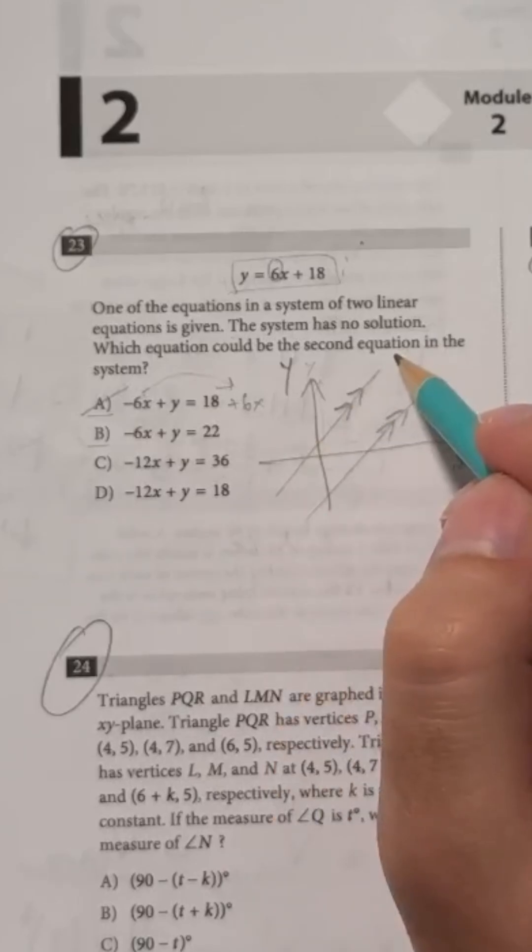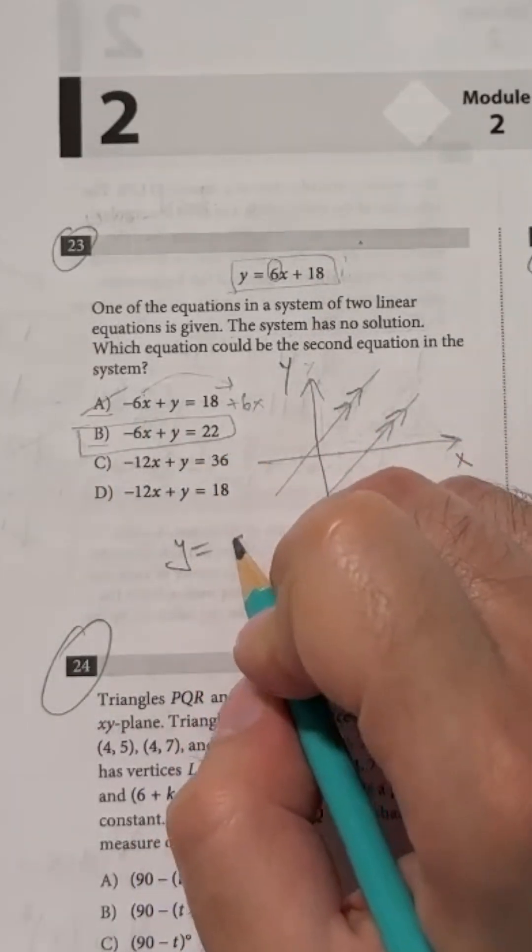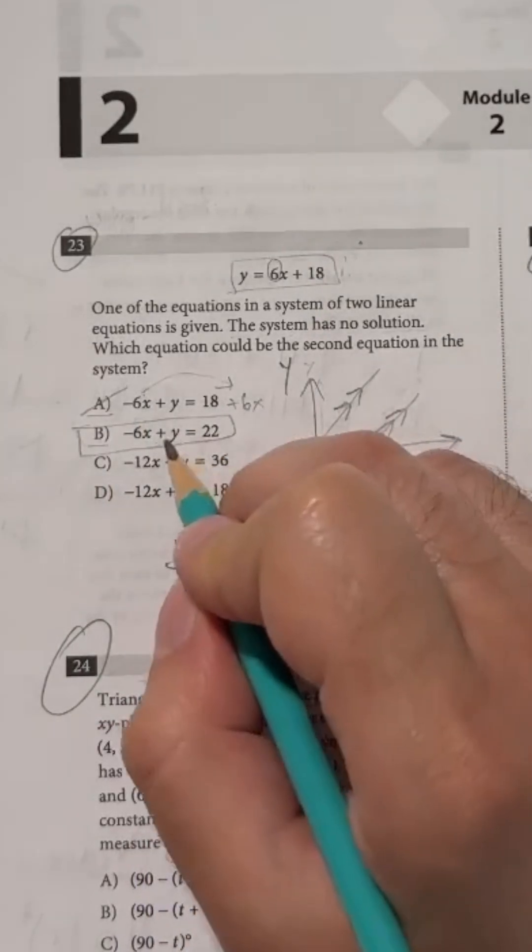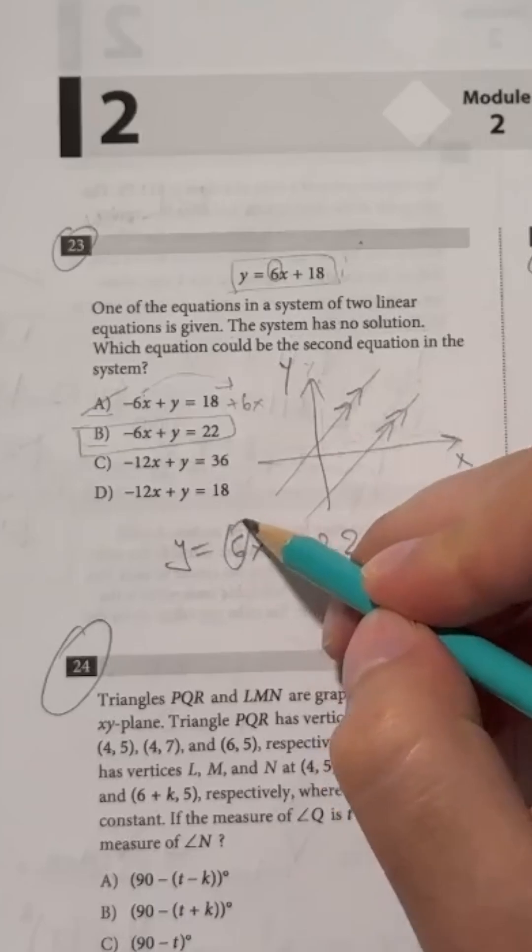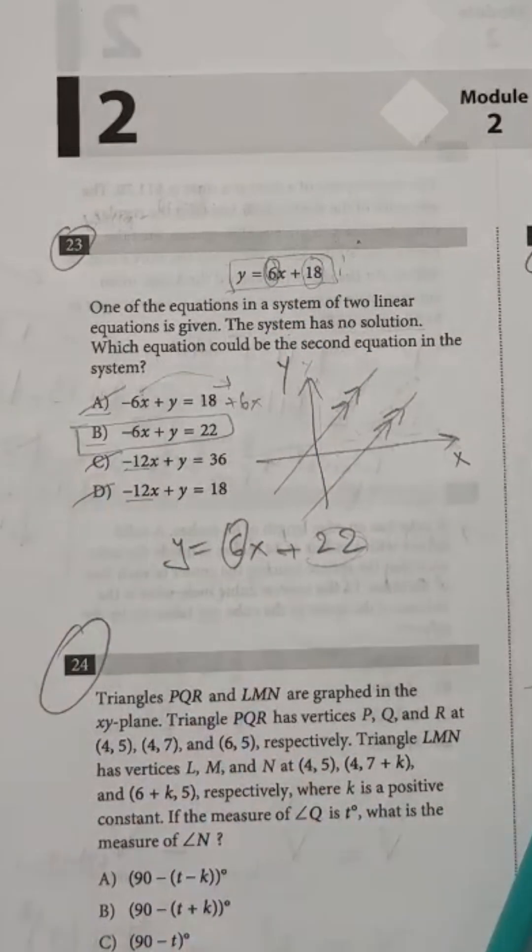So the only option left that has the same slope as the given is choice b. You can arrange it to give the same form as the given equation, y equals 6x plus 22. The slopes are the same. Therefore, choice b is the correct answer. This is the answer. Here you see.